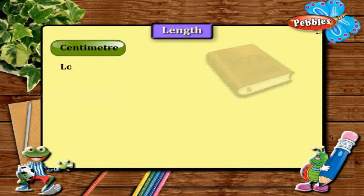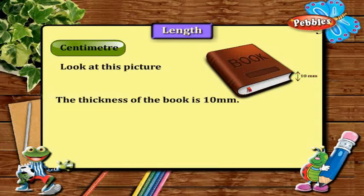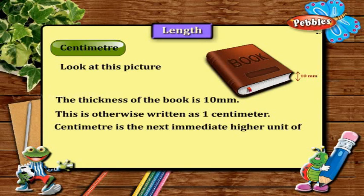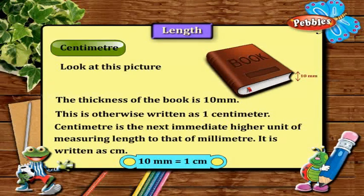Centimeter. Look at this picture. The thickness of the book is 10 mm, which is otherwise written as 1 centimeter. Centimeter is the next immediate higher unit of measuring length above millimeter. It is written as cm. Remember, 10 millimeters is equal to 1 centimeter.